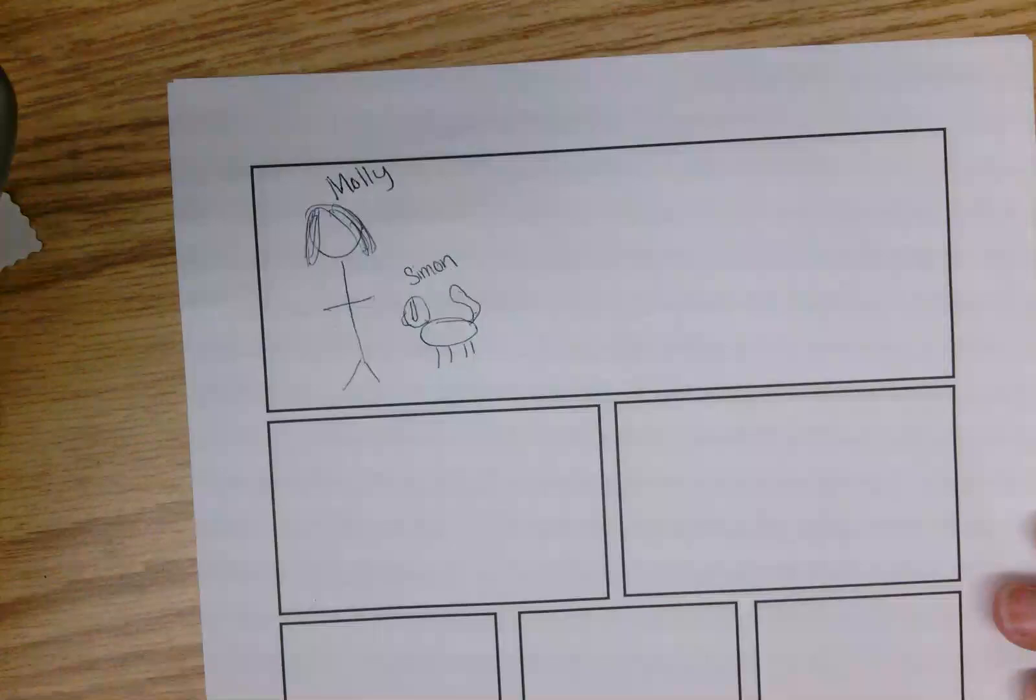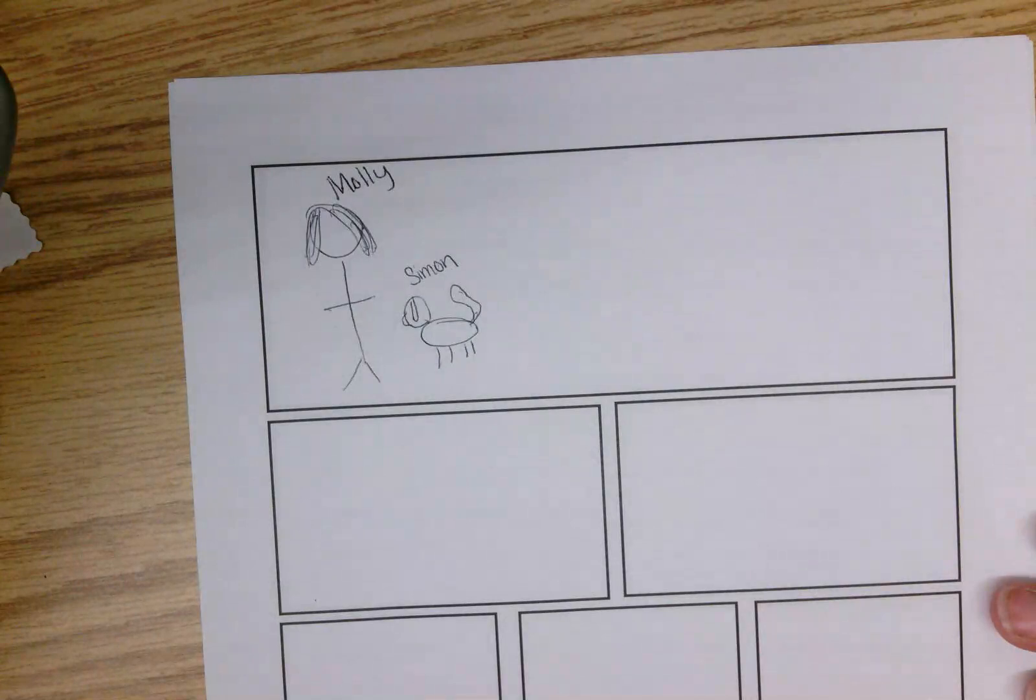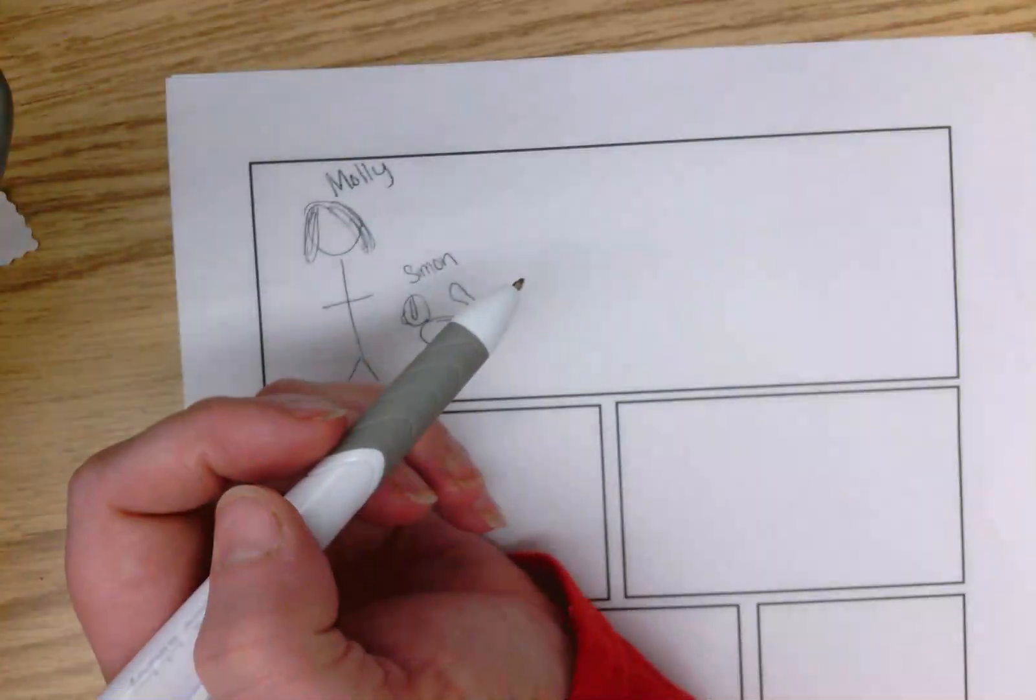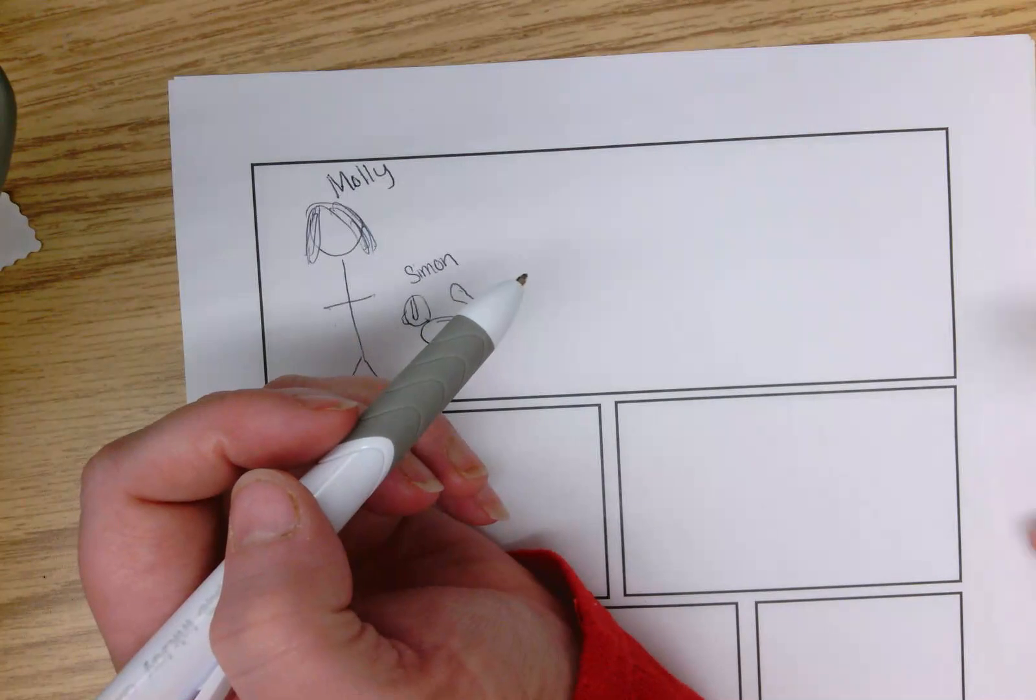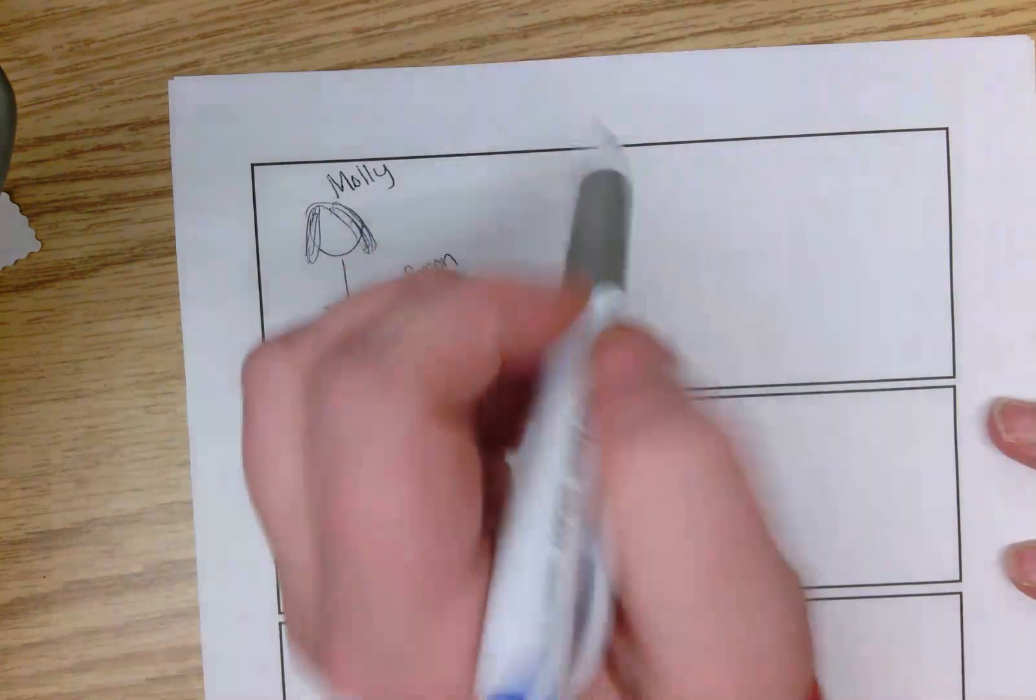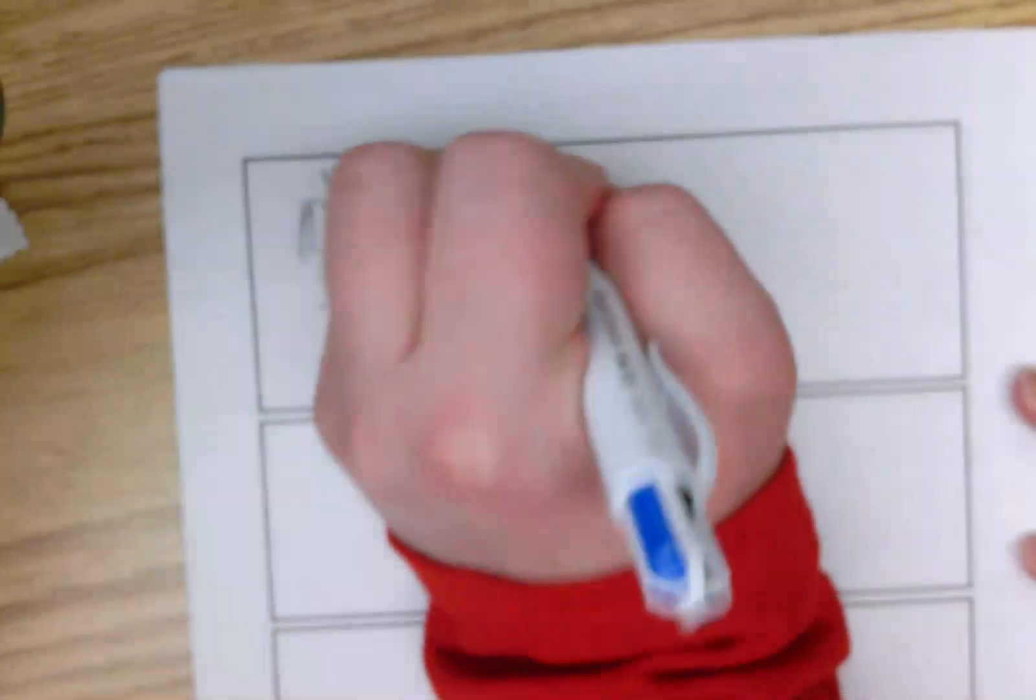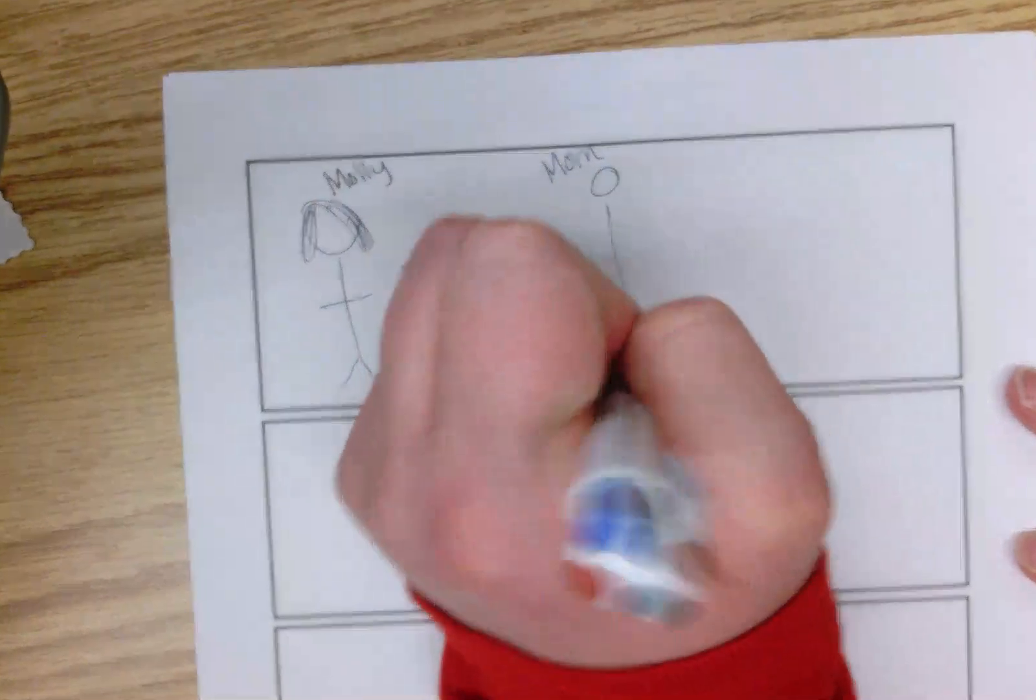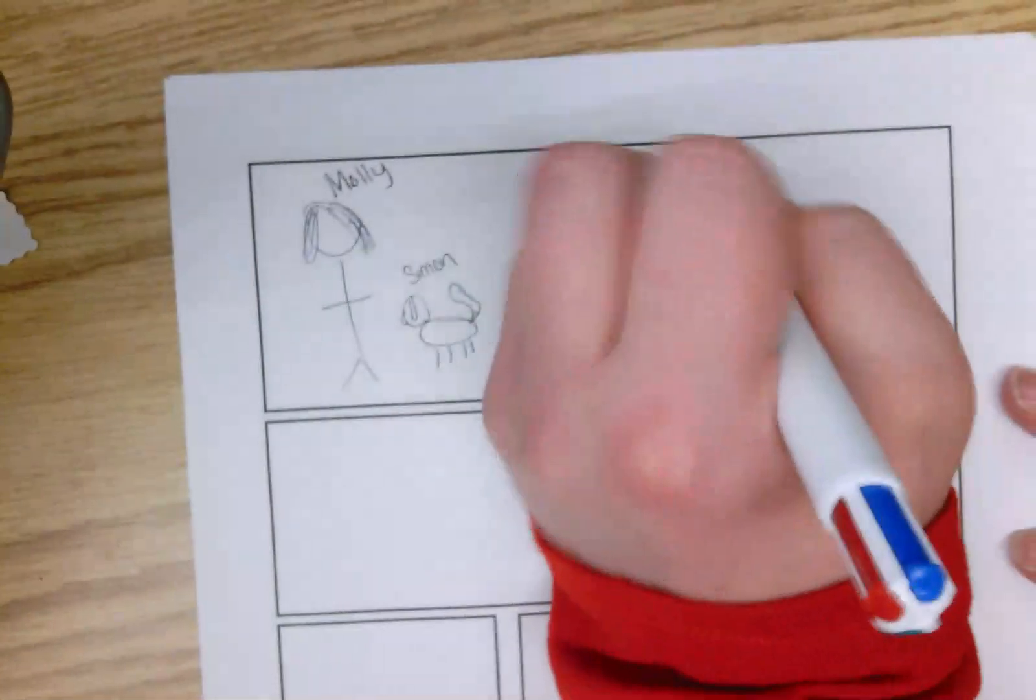And then who else is going to be important to your story? You're going to need at least a couple more people, right? So I'm going to have Molly's mom. Oh, I'm going to have Max, Sam, and Molly's dad.